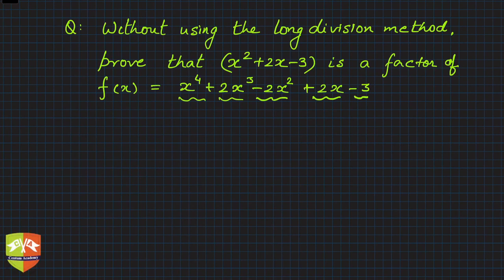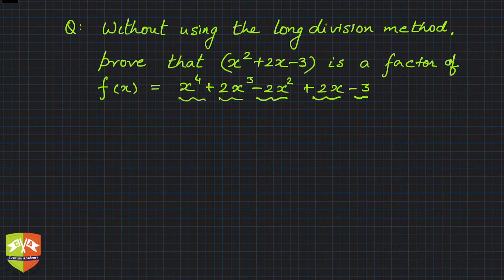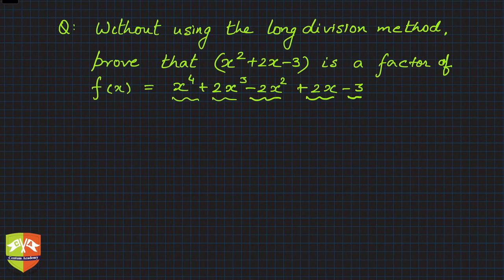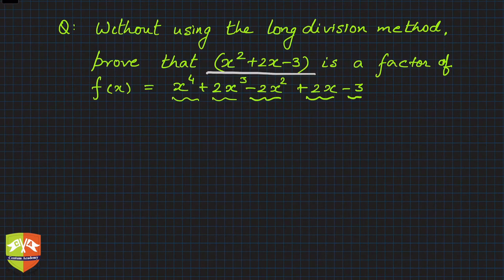Hello friends, welcome to another session on problem solving related to the factor theorem. The question says: without using the long division method, prove that x² + 2x - 3 is a factor of f(x) = x⁴ + 2x³ - 2x² + 2x - 3. If we could use long division, we could divide f(x) by the given divisor and show that the remainder is 0, establishing it as a factor.